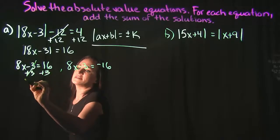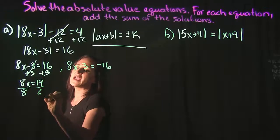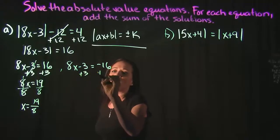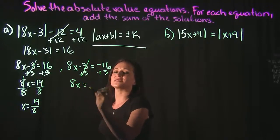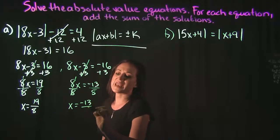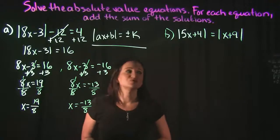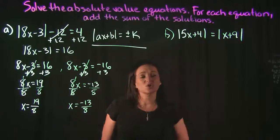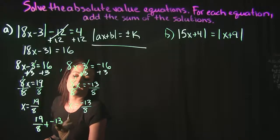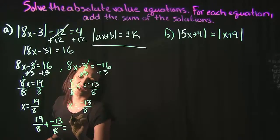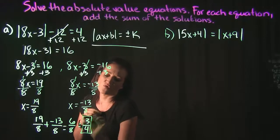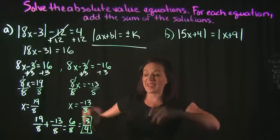Solving the first equation: add 3 to both sides to get 8x = 19, then divide by 8 to get x = 19/8. For the second equation: add 3 to both sides to get 8x = -13, then divide by 8 to get x = -13/8. These are our two solutions. The question asks for the sum, so 19/8 + (-13/8) = 6/8, which simplifies to 3/4.